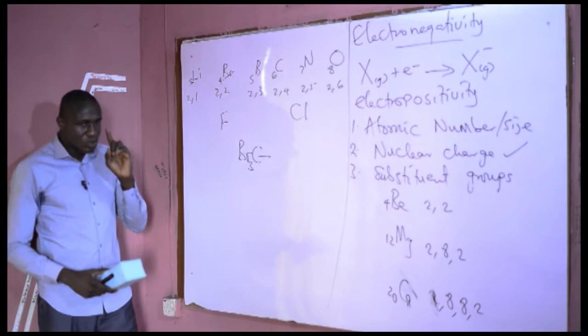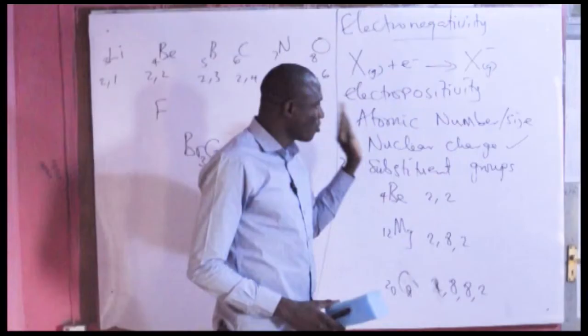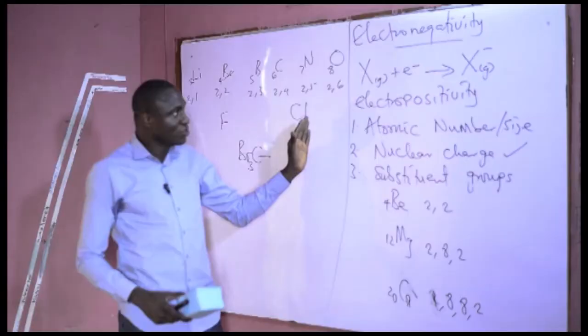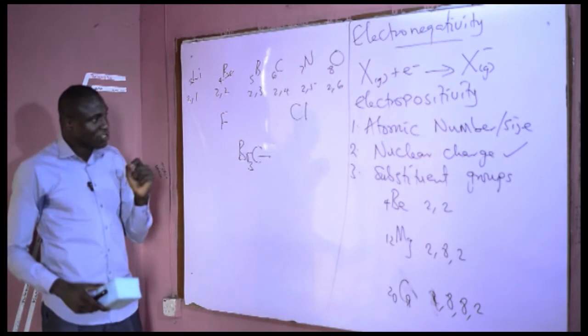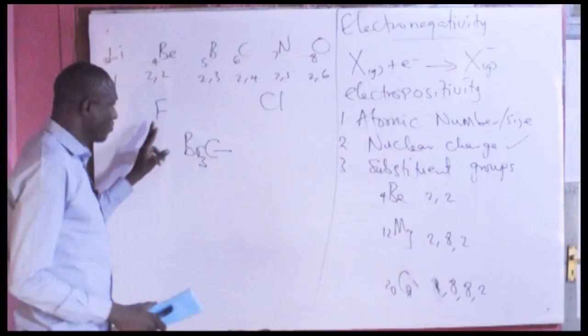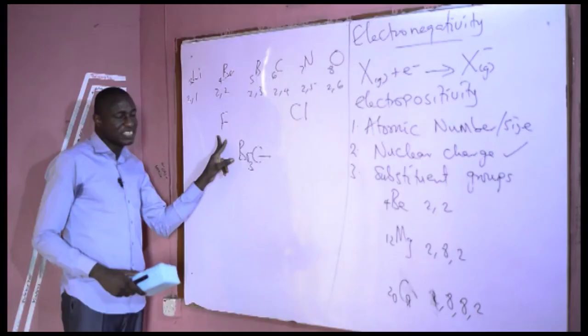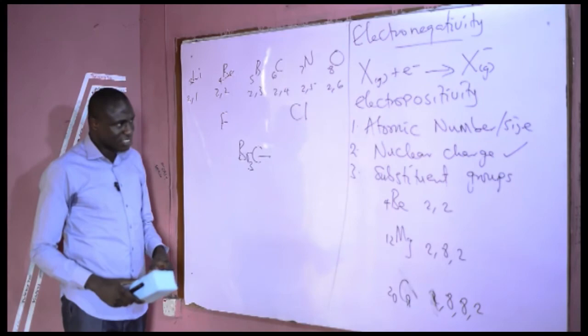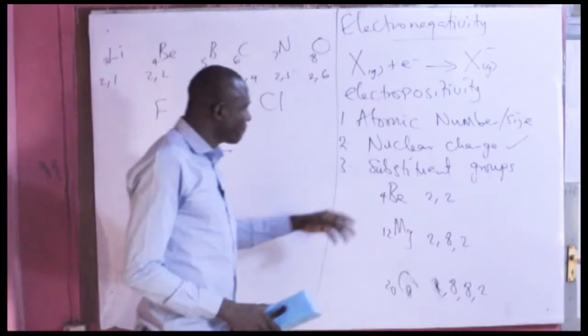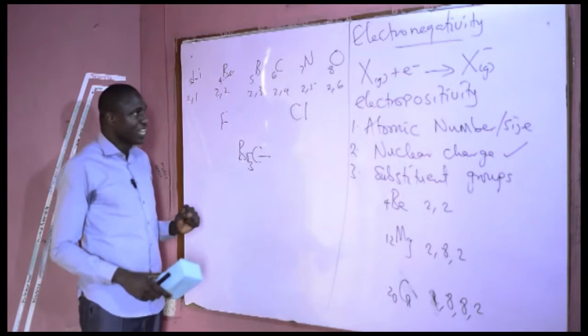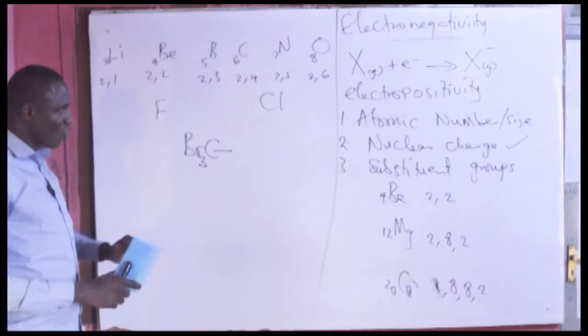To summarize: electronegativity increases across the period from left to right and decreases down the group from top to bottom. The most electronegative element is fluorine, due to its smaller atomic size — the higher the size of an atom, the lower the electronegativity value. The effects of nuclear charge and substituent groups have also been explained.